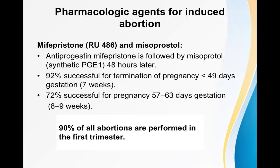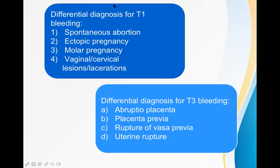Almost 90% of abortions are performed in the first trimester, because if performed later there is a higher chance of complications including hemorrhage and retained fetal parts. The decision and procedure should be done in the first trimester when possible.